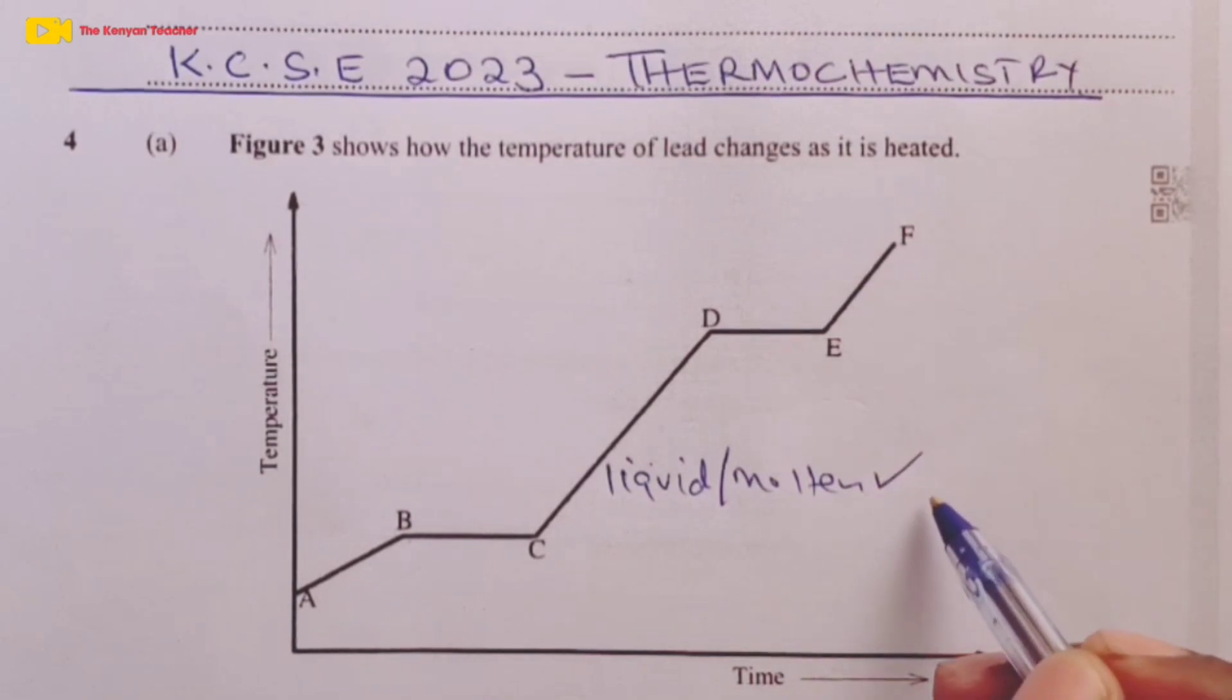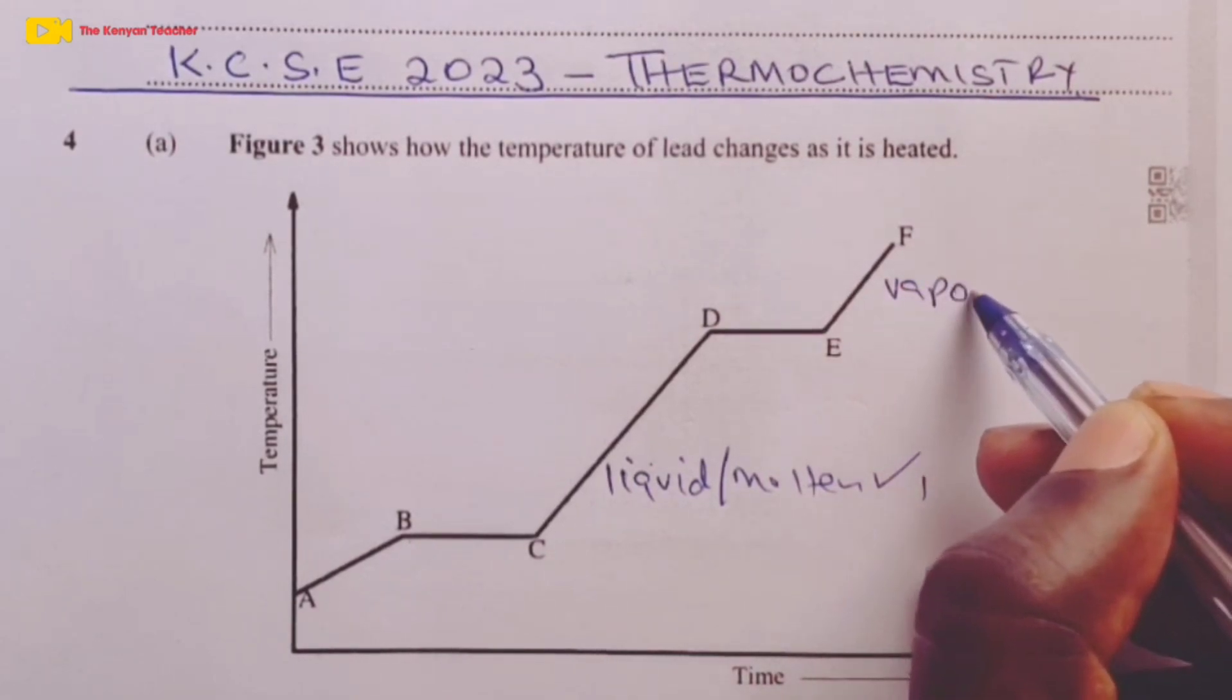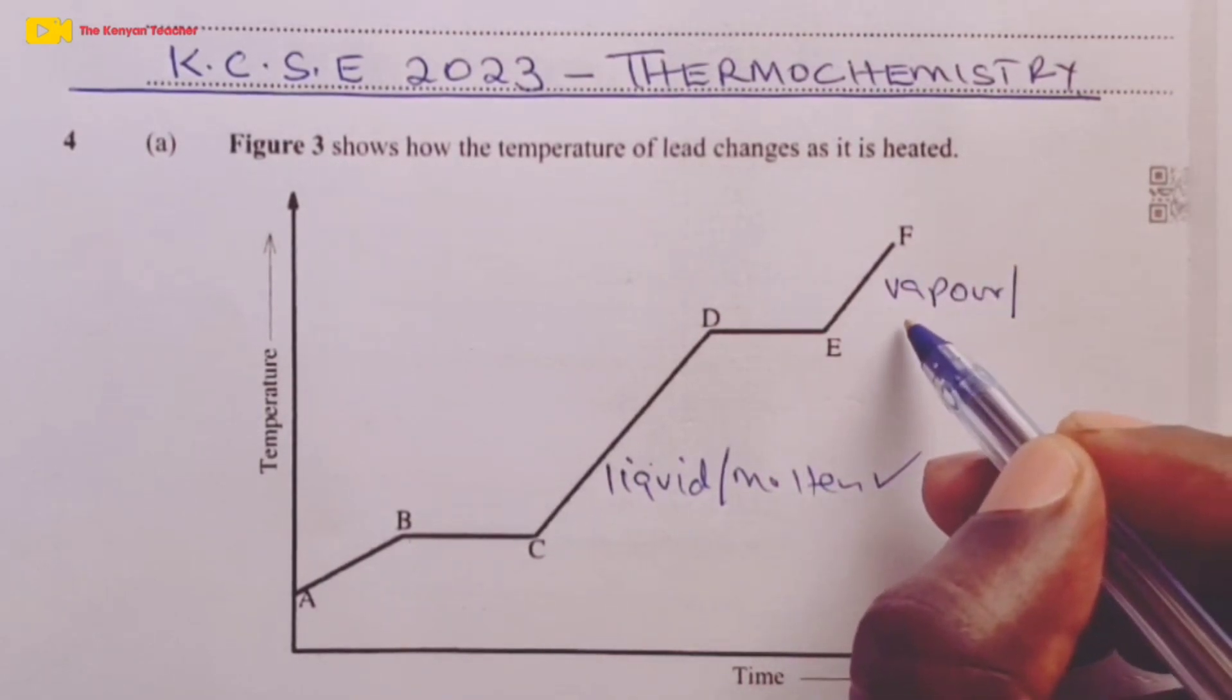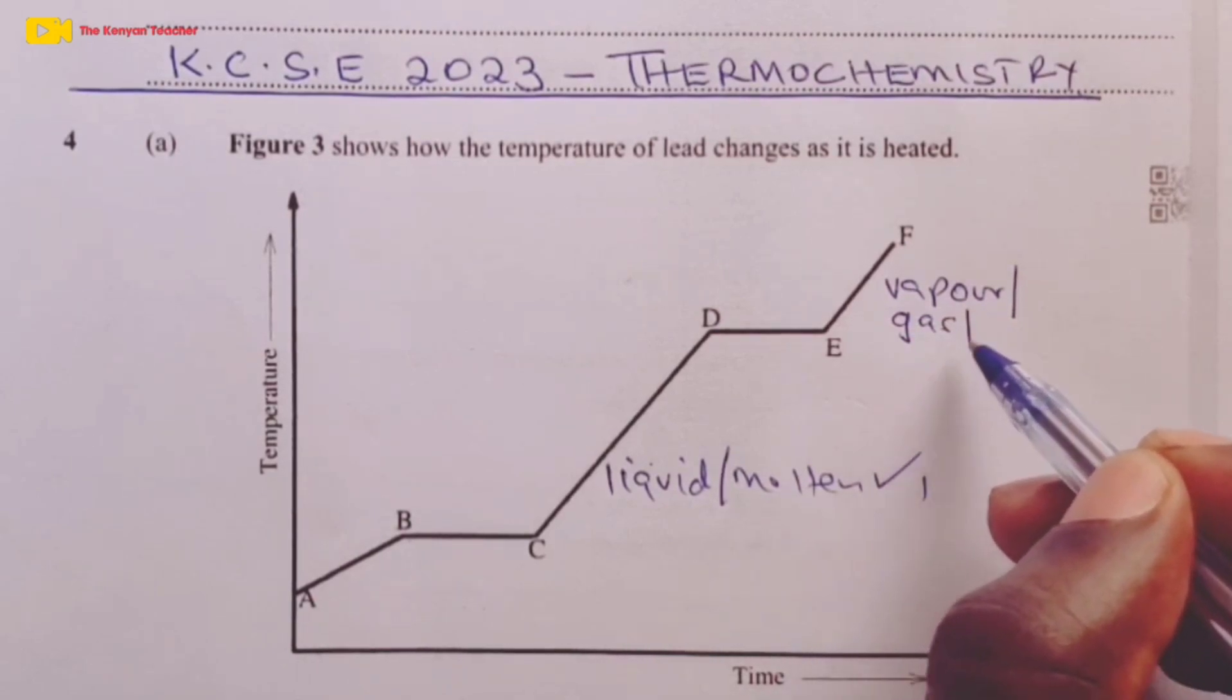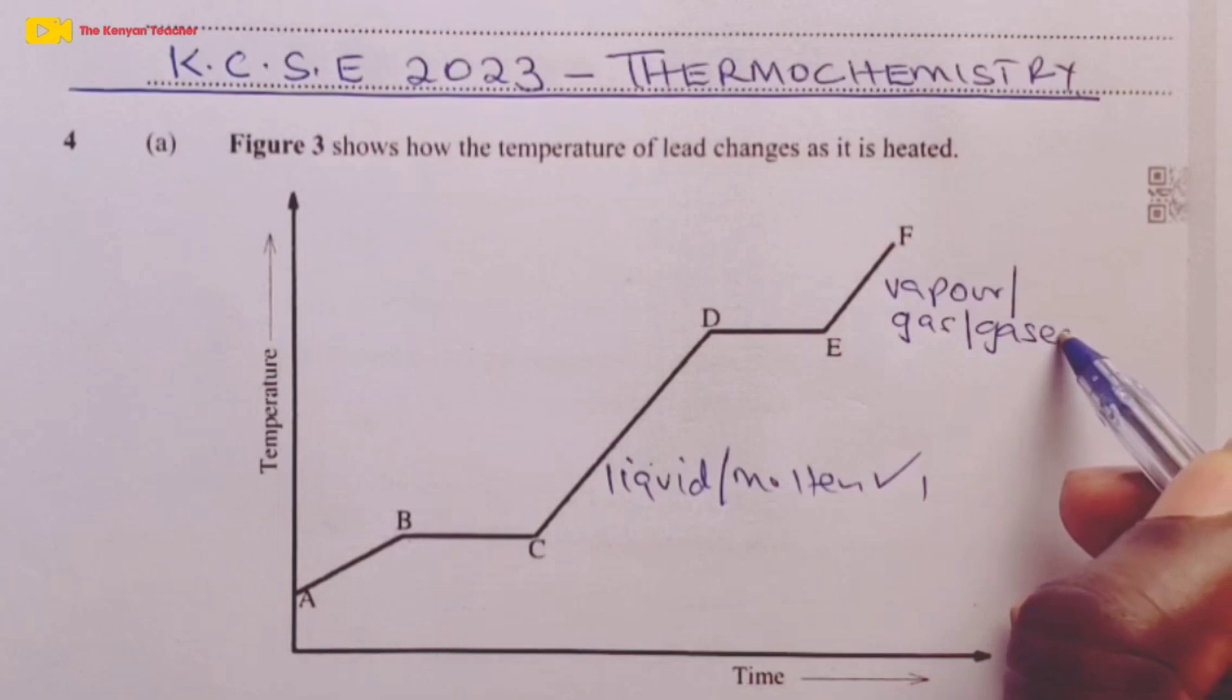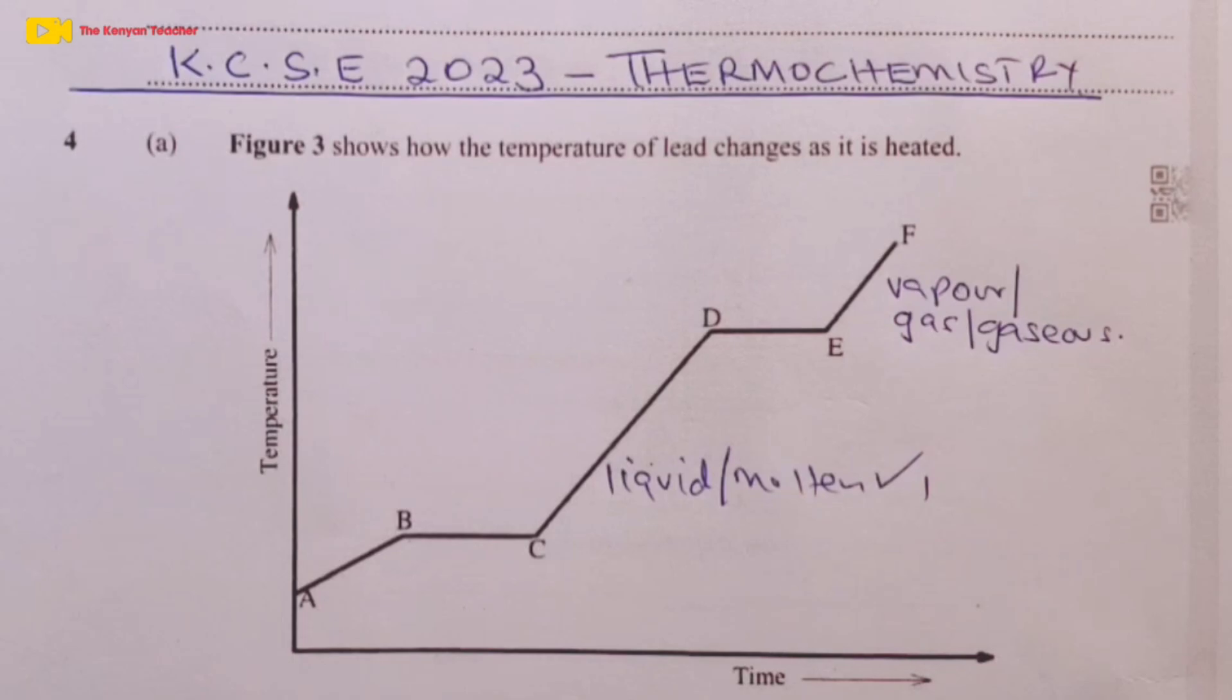When it comes to region E, F, the state is either vapor or a candidate would go for gas and even gaseous would score for the state of lead between region E and F. We proceed to Roman 2 of part A.